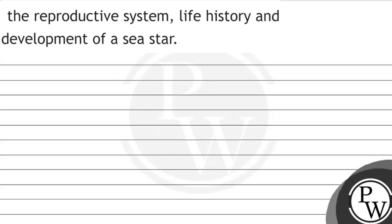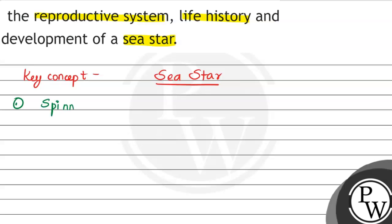Let's start the question: the reproductive system, life history and development of C star. The key concept of this question is C star. C star हमारा key concept है। Common C star की बात करें तो यह होते हैं spiny skinned echinoderm — that means यह belong करते हैं to the phylum of Echinodermata.